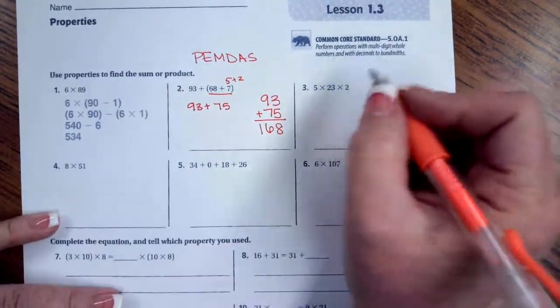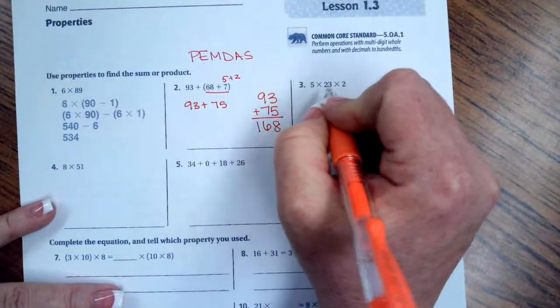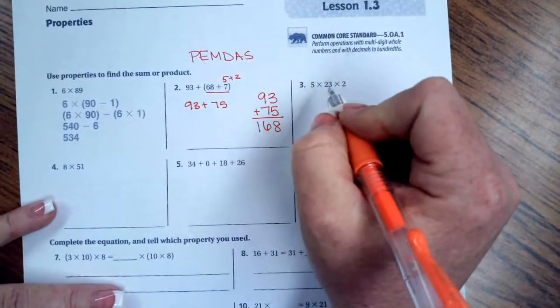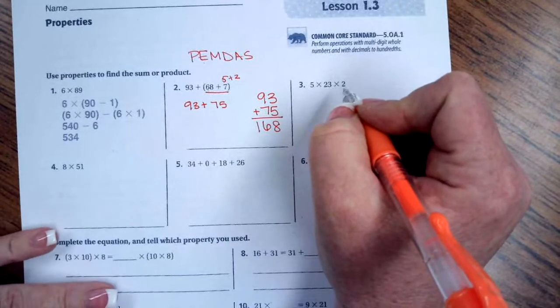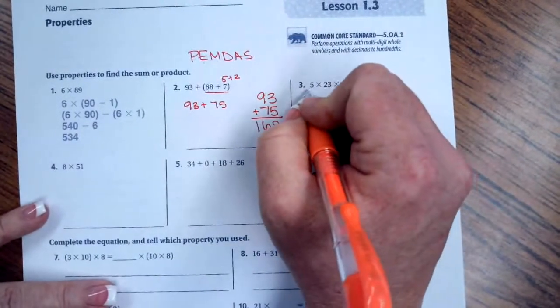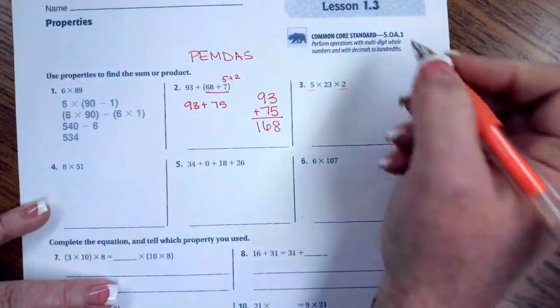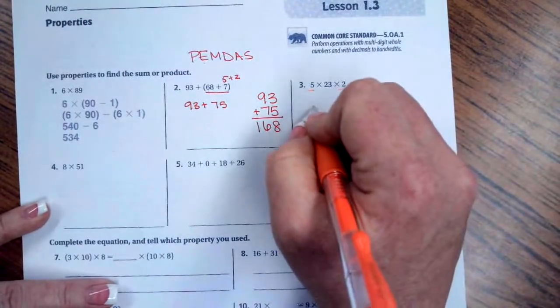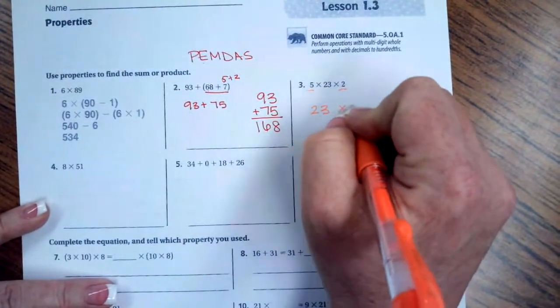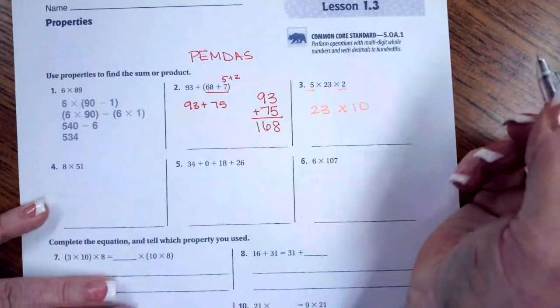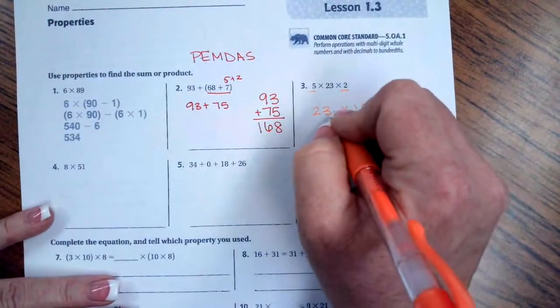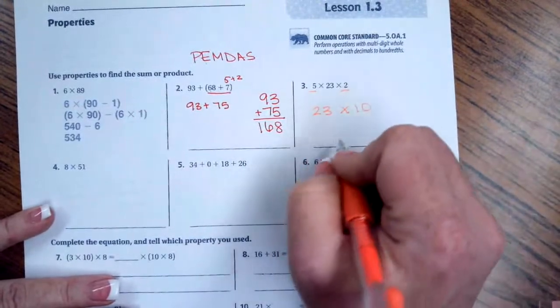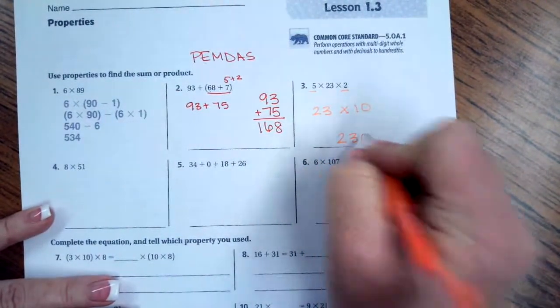Go ahead and do number 3. So we have multiplication. So here's the thing, multiplication you can do in any order. As long as all of your signs are multiplication, you can do that in any order. So I'm going to do 5 times 2 first, which I know is 10. So now I have 23 times 10. Well, here's the really cool part about multiplying by 10. You get to take that 0 and just pop it onto the end of the other number. Your answer is 230.